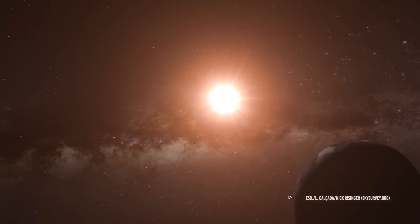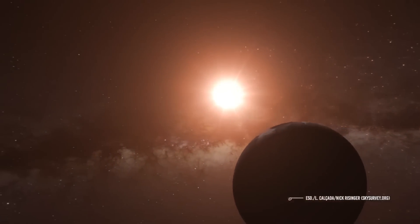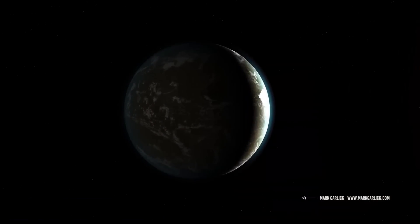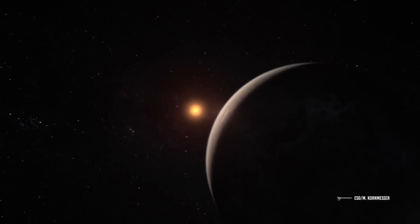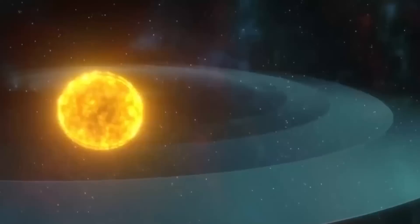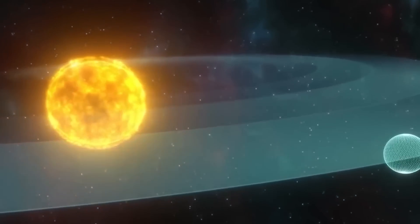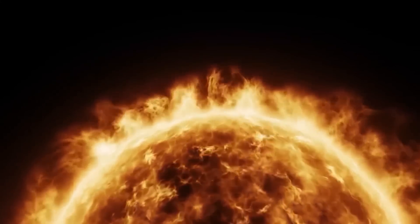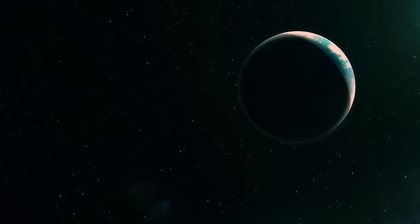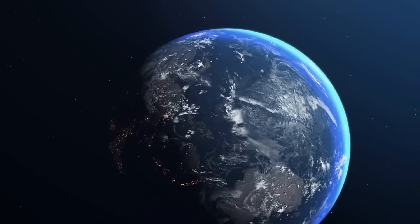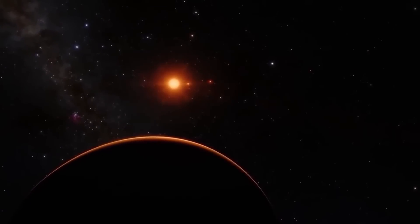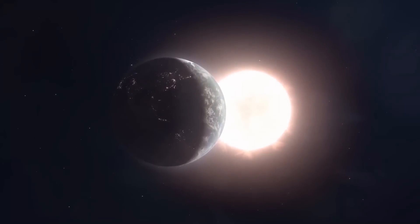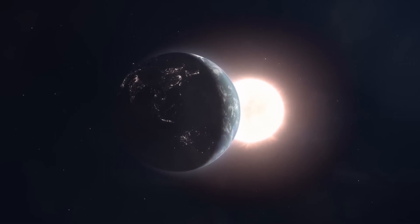The Proxima b planet, which is the only confirmed planet in the Proxima Centauri system and is 4.25 light-years away from Earth, is the target of the JWST. A rocky planet called Proxima b is located in the habitable region of Proxima Centauri, an M-class red dwarf star. The mass of our Sun is only 12% smaller than that. Proxima b has a radius that is one-third our size and about one-sixth the mass of Earth. It travels 7 million kilometers, or just 5% of the distance that Earth travels around the Sun in just 11.2 days to complete one orbit of Proxima Centauri.